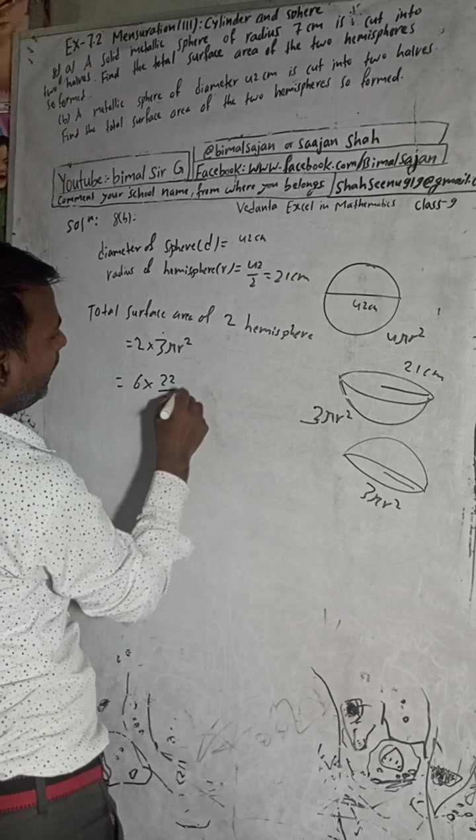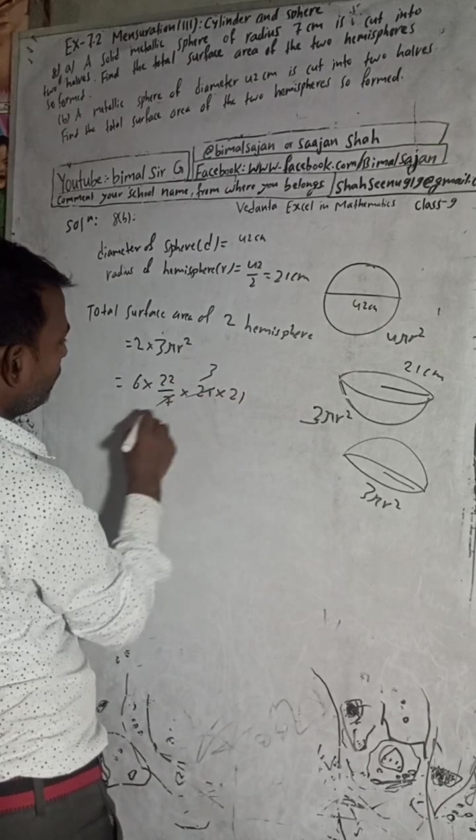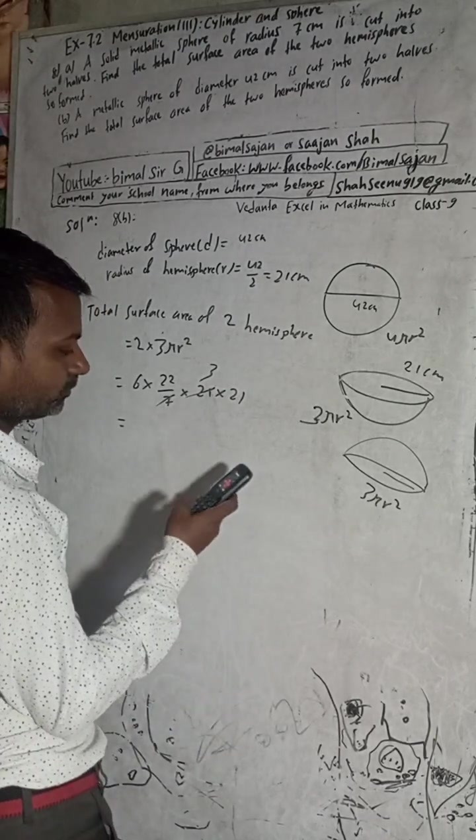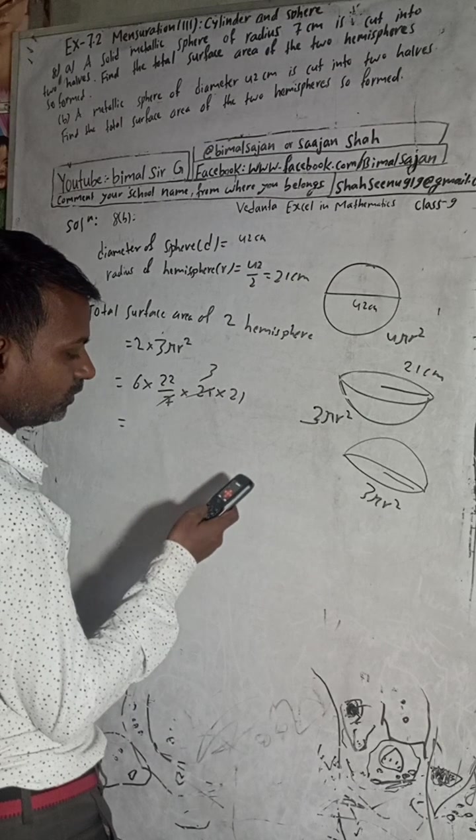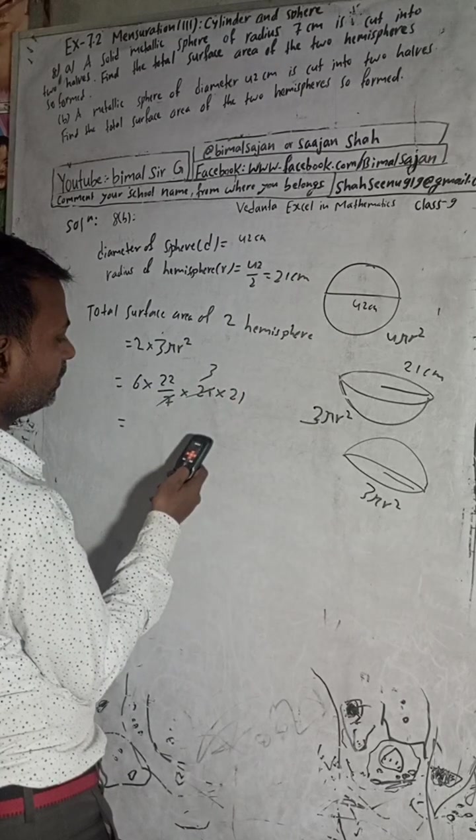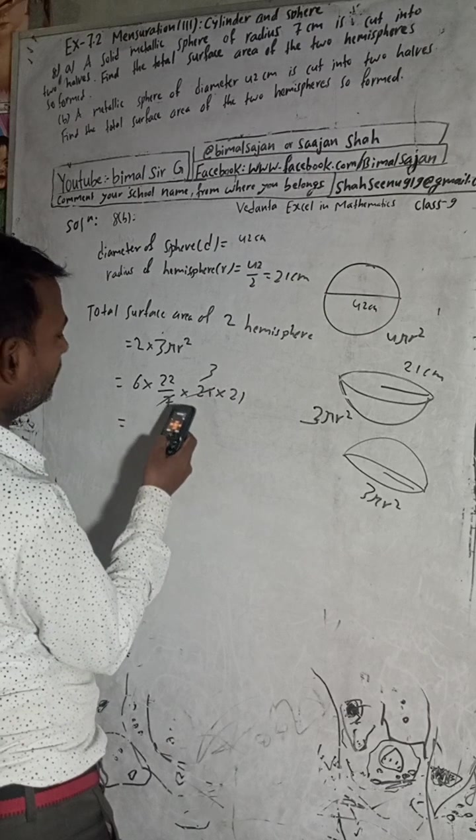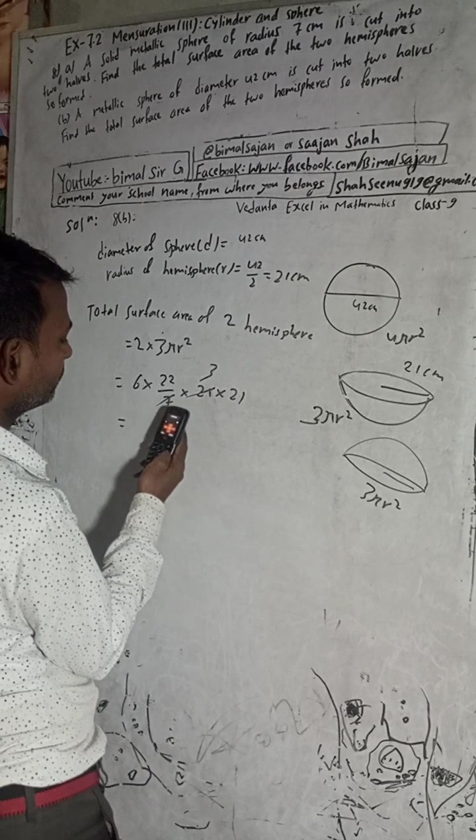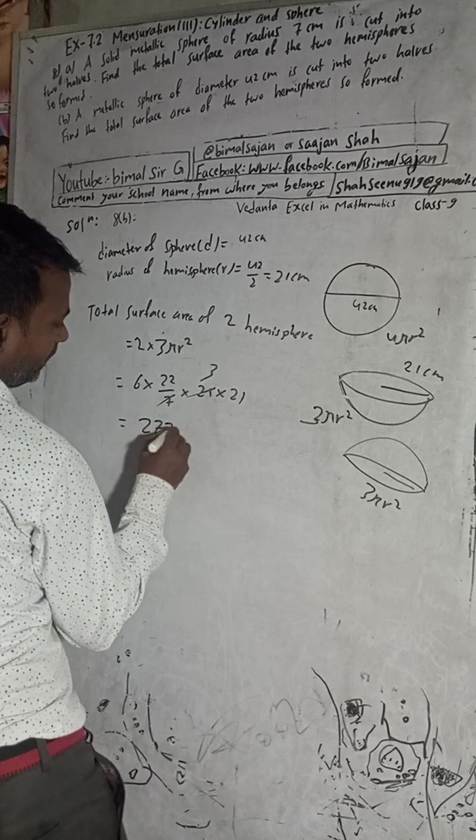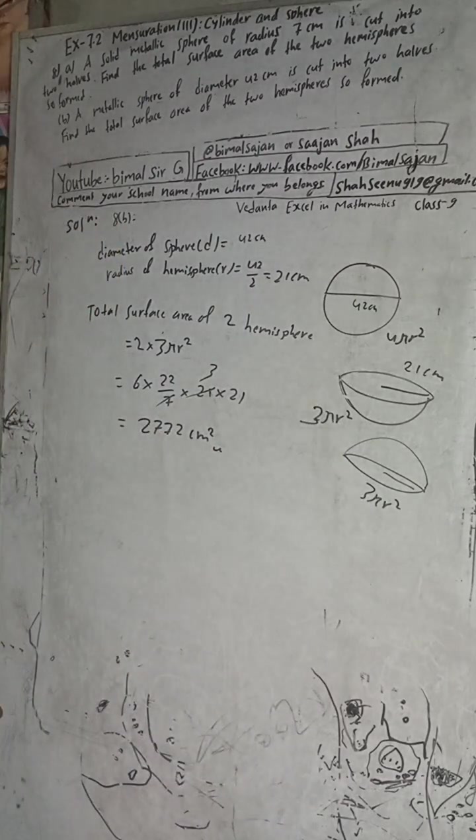r is 21, so it becomes 6 × 22/7 × 21 × 21. Simplifying: 7 goes into 21 three times, so we get 6 × 22 × 3 × 21, which equals 8316 cm².